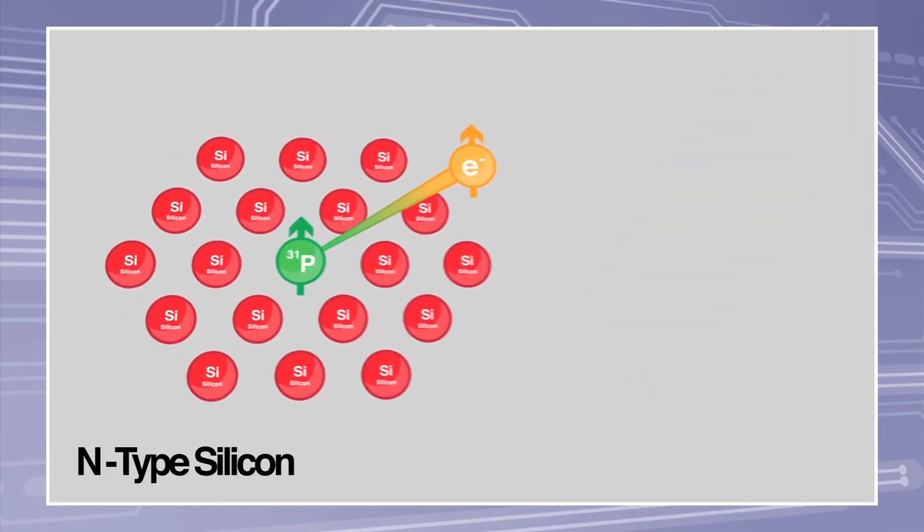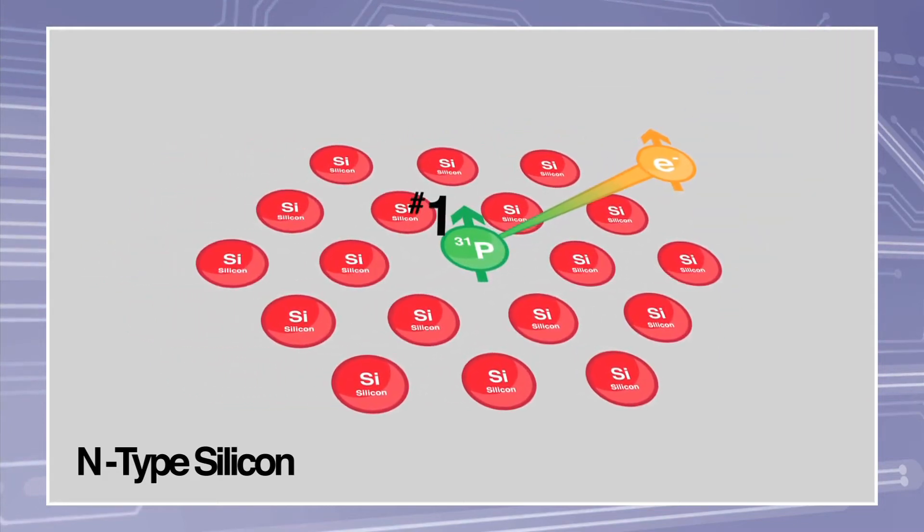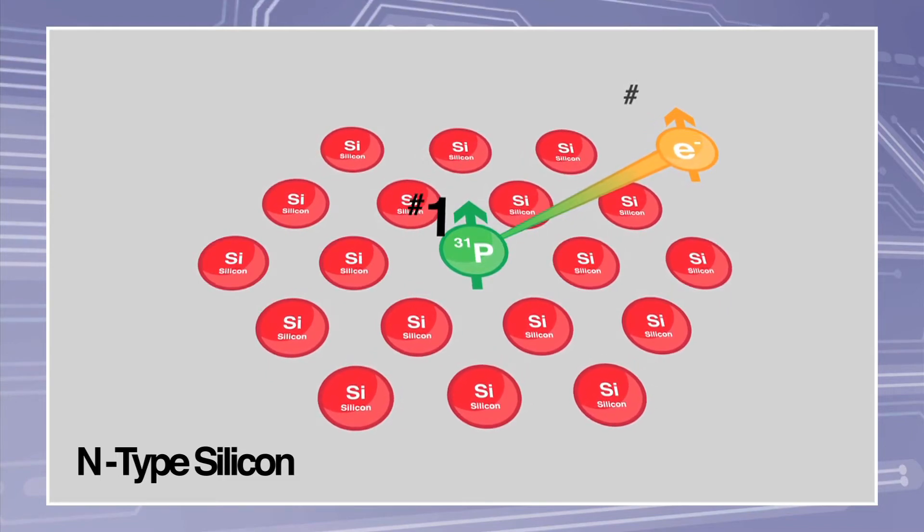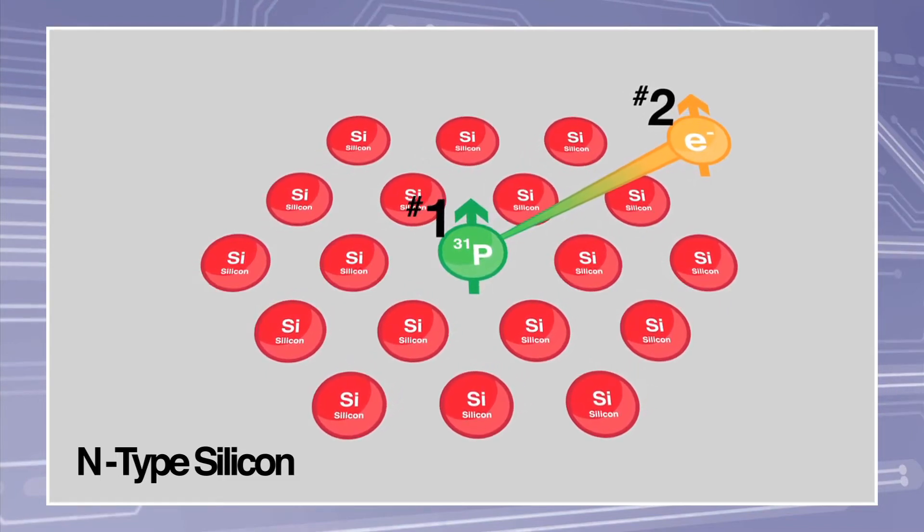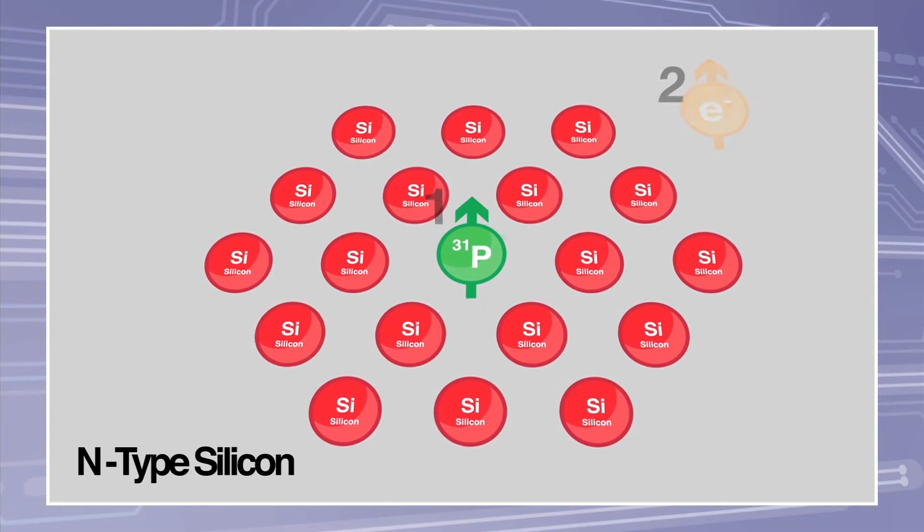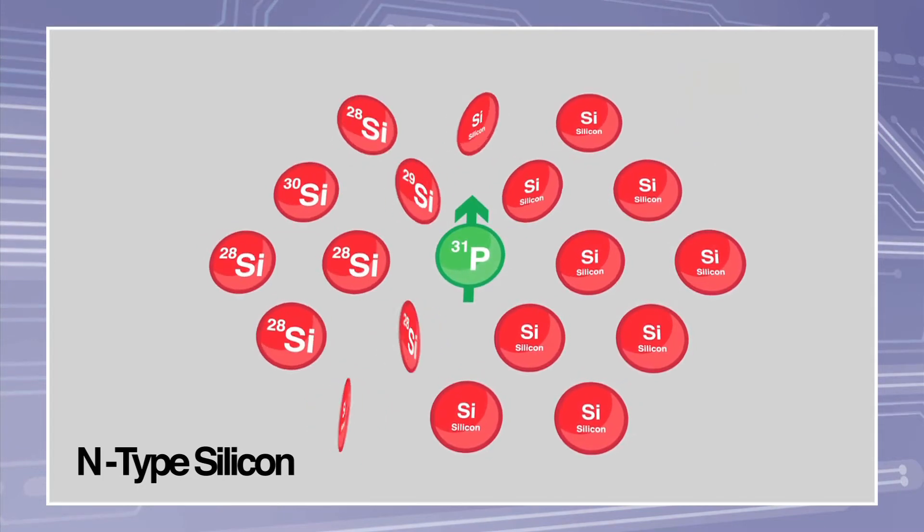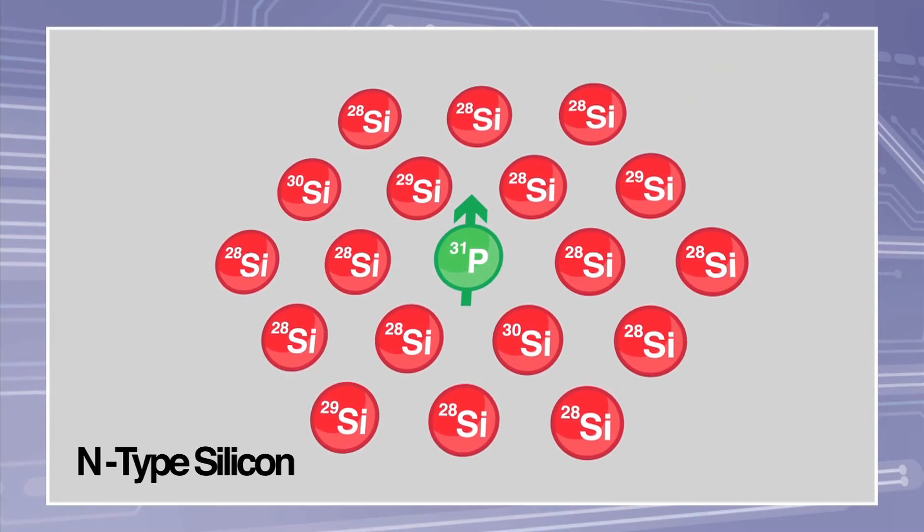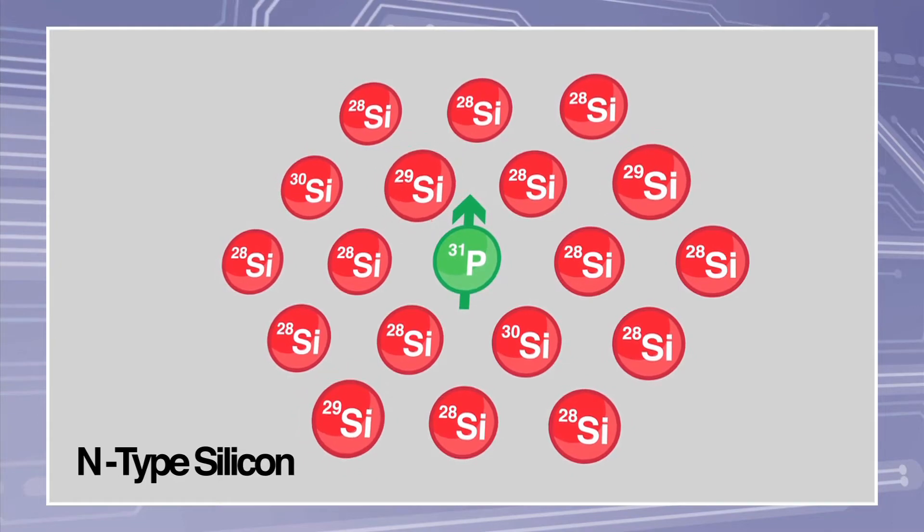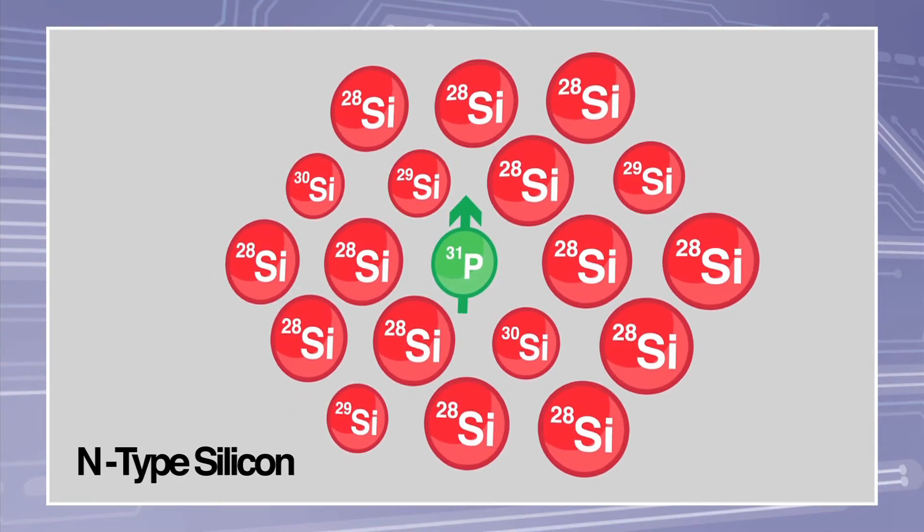The nucleus spin of a phosphorus atom is considered as one quantum bit, and the captured electron's spin is another quantum bit, and entanglement is created between the two quantum bits. However, until now, random distribution of three stable isotopes of silicon disturbed the uniformity in space and a truly vacuum-like environment was difficult to achieve.